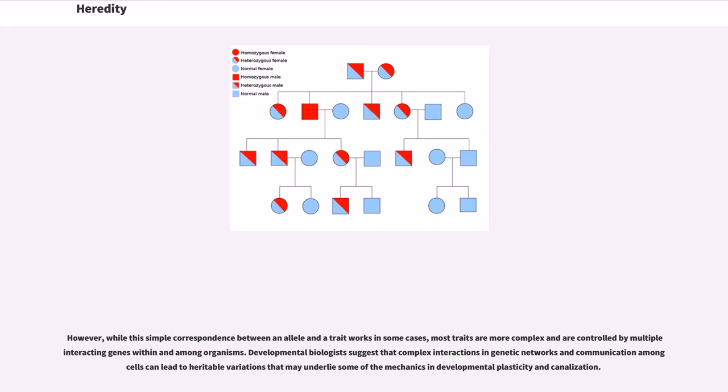However, while this simple correspondence between an allele and a trait works in some cases, most traits are more complex and are controlled by multiple interacting genes within and among organisms.